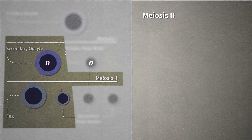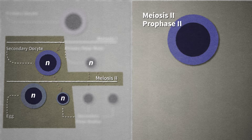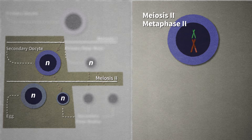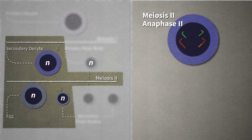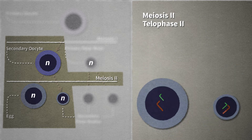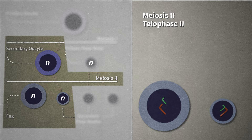Remember, the meiosis I products are haploid, and so are their daughter cells. Meiosis II starts with prophase II, as the chromosomes condense. In metaphase II, the chromosomes move to the center of the cell and line up along the equatorial plane. In anaphase II, the chromatids making up a chromosome are separated from each other and pulled to opposite poles. During telophase II and cytokinesis, the cell divides to produce two haploid daughter cells: a large egg and a tiny polar body.